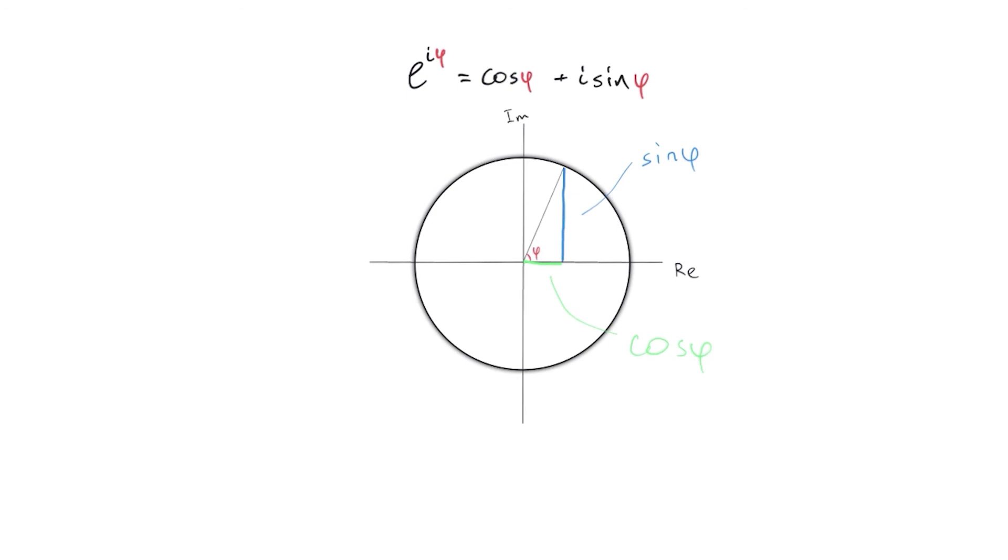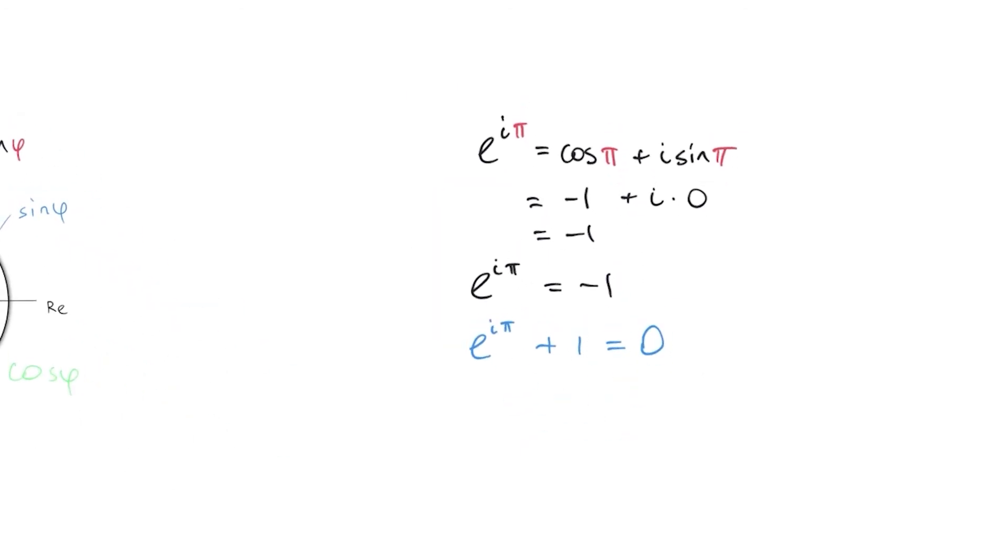Now, finally, to show that Euler's identity is true, we just plug in pi into the equation. So e to the power of i pi equals cosine pi plus i times sine pi. And as we already know, cosine of pi is negative one and sine of pi is zero. So i times zero is zero. So we're just left with minus one. So e to the i pi equals minus one. And if we just carried over to get the positive one, we have e to the i pi plus one equals zero. There you go.